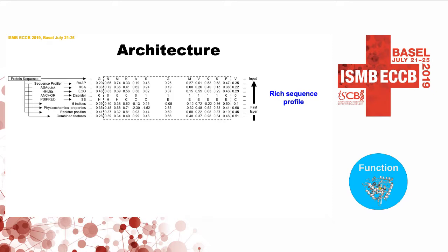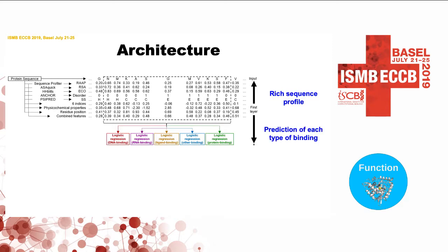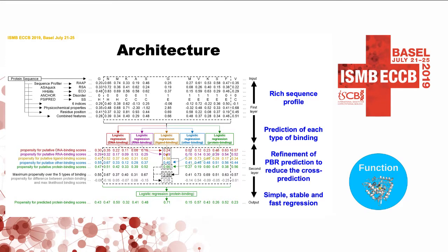The second step in the model is prediction of binding residues. We predicted five types of binding residues including residues that bind RNA, DNA, small ligands, proteins, and anything that is a non-protein binding residue but is a binding residue. We created five models with a singular purpose: we are going to use one model and refine protein binding prediction with the other four predictions. In the second layer, we refine the prediction of protein binding residues with the other four predictions, essentially reducing scores for predictions which are non-protein binding specific.